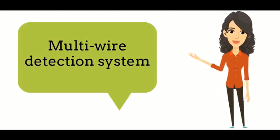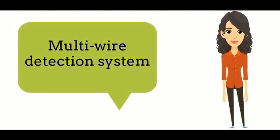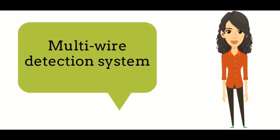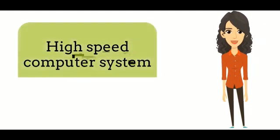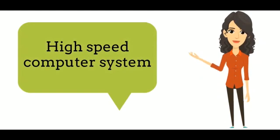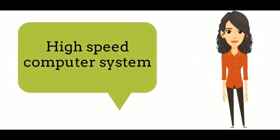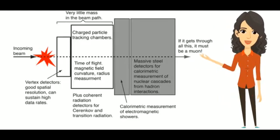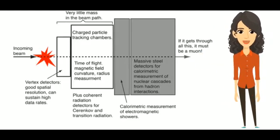Multi-wire detection systems with nearly a quarter of a million channels of electronics provide information of these tracks. High-speed computer systems process and store the data from these detectors. This is high-energy charged particle detector.